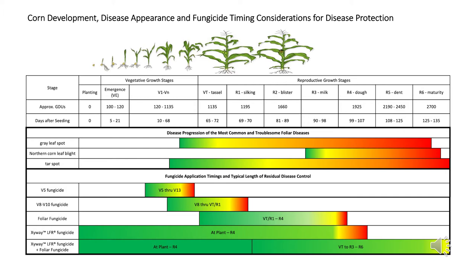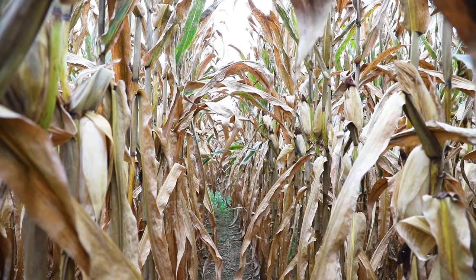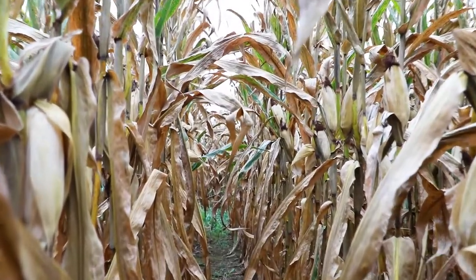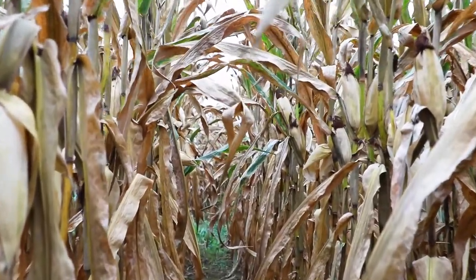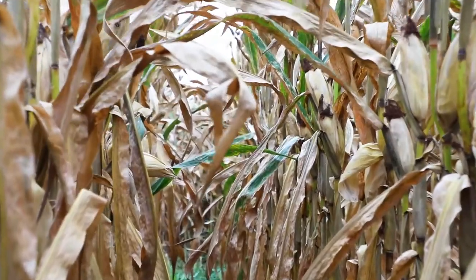Now that we've looked at some of these different timings and how we expect them to perform, let's transition to the field and look at an actual application and the results here at black layer at the end of the season. This treatment here is the untreated check — you can see that it's almost totally senesced as we're right at black layer at this point in time.